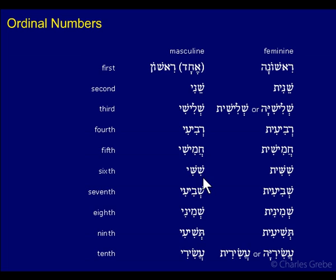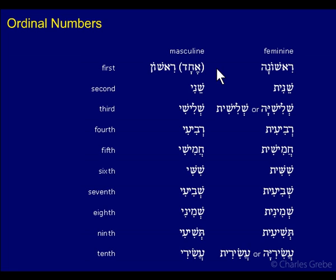Continuing: Chamishi, Shishi, Shevi'i, Shemini, Teshi'i. So those are your ordinals in the masculine. If you're reading the Bible starting in Genesis chapter one, you'll encounter these because all the days of creation use these words — from day one down to the seventh — and they use the masculine forms because Yom is masculine.